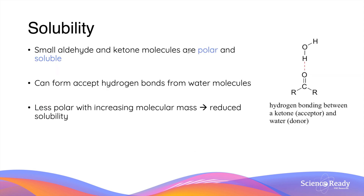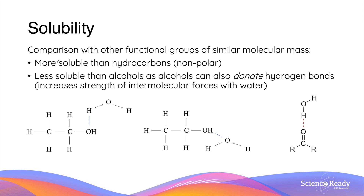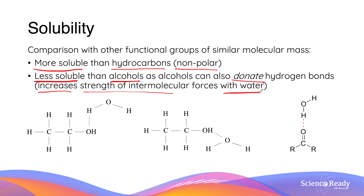Small aldehyde and ketone molecules are polar and therefore soluble in water. This is because these molecules can accept hydrogen bonds from water molecules, as you can see in this diagram. However, aldehyde and ketone molecules become less polar as the molecular mass increases, leading to reduced solubility in water. When comparing molecules of similar molecular mass, aldehyde and ketone molecules are more soluble in water than hydrocarbons, as hydrocarbons are mostly non-polar. They are however less soluble than alcohols, as alcohol molecules can both donate and accept hydrogen bonds from water molecules, increasing intermolecular forces and making them more soluble.